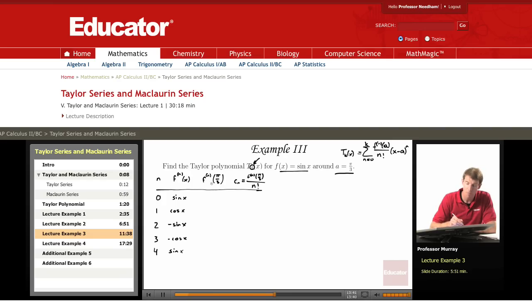If you plug in π/3 to each one of these, the sine of π/3 is √3/2. Cosine of π/3 is 1/2. Negative sine is -√3/2. Negative cosine is -1/2. And then the sine is √3/2 again.